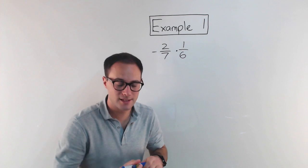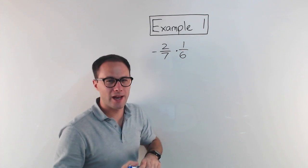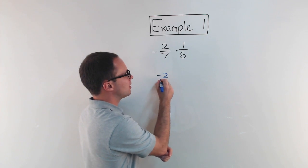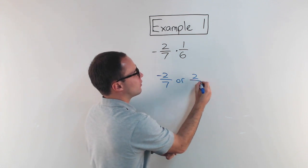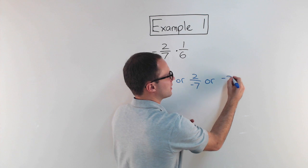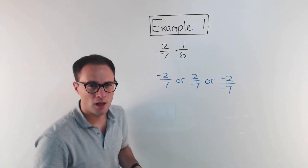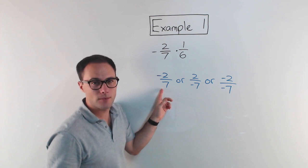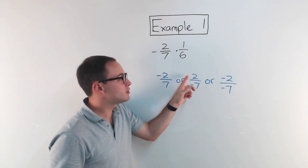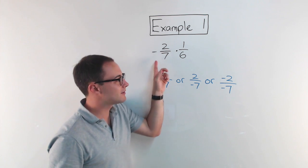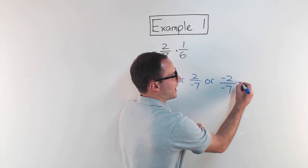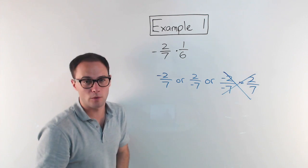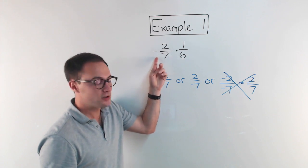Negative two-sevenths times one-sixth. Before we get going, one common question I get asked by a lot of students is: does negative two-sevenths mean negative two over seven, or two over negative seven? Or are they both negative — negative two over negative seven? Really, either of the first two would work. Negative two over seven is the same as negative two-sevenths, and two over negative seven is also the same thing.